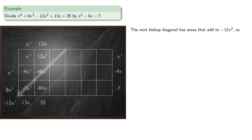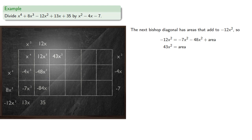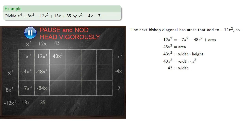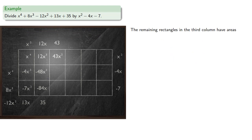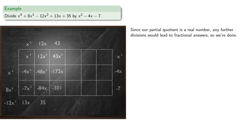The next bishop diagonal has areas that add to negative 12x squared. We already know the areas of two of these rectangles, so there's only one whose area we don't know. Since area is the product of width and height and we know the height, we can find the width. The remaining rectangles in the third column can now be filled in. At this point our partial quotient is a real number, so any further divisions will lead to fractional answers — we're done.